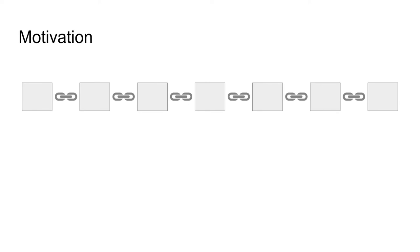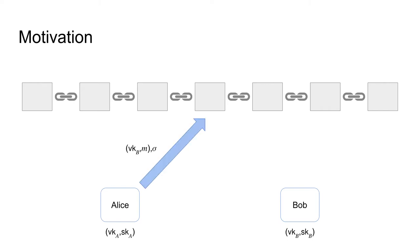Starting with some motivation, we consider the standard blockchain setting where we have two parties Alice and Bob that are both in possession of a signature key pair. If Alice now wants to create a transaction for Bob, she uses her signing key to generate a signature over the transaction details M and the verification key of Bob. The generated transaction can then be checked for validity using the verification key of Alice. Furthermore, we require unforgeability in this setting, which means that no one other than Alice should be able to create a valid signature in her name.